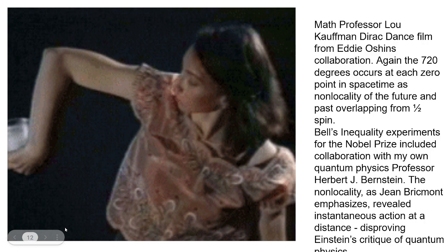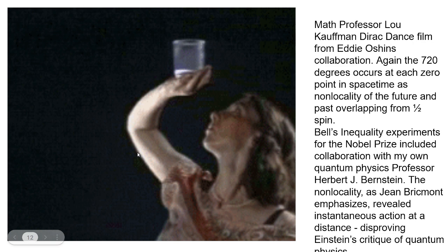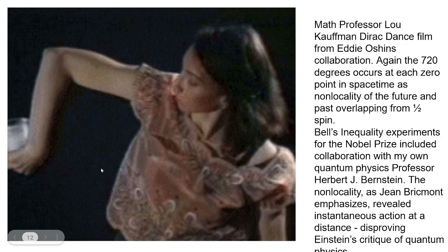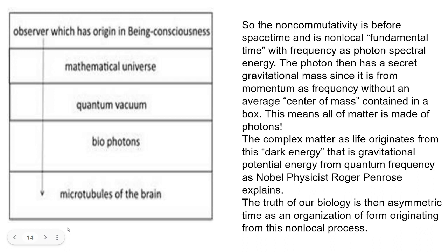Math professor Lou Kaufman made a video collaborating with Eddie Oshins. Here a Balinese wine dancer demonstrates the one-half spin principle — the wine glass never spills and stays upright. This was actually taught in a first-year quantum physics class from Herbert J. Bernstein. This demonstration proved Einstein wrong.